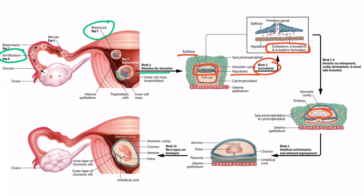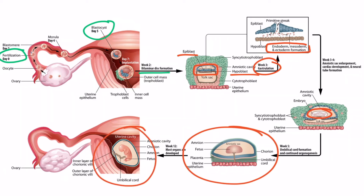The middle layer, or mesoderm, gives rise to the urinary and genital system, including an important structure known as the nephrogenic cord. From this image, we can see a cross-section at week five, and a lateral view of a mostly formed fetus at week 12. Between this point, around week seven, the urogenital system begins to form, and we could see the nephrogenic cord much better in a lateral view of the fetus at this time.